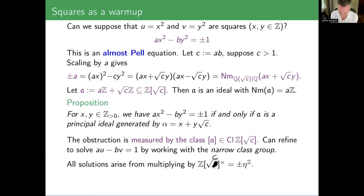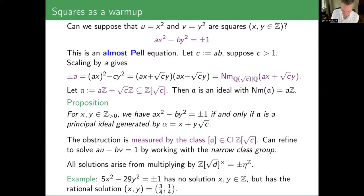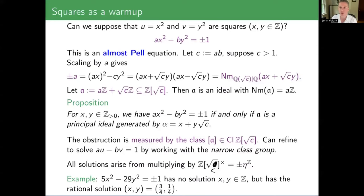Here's an example: if I take the equation 5x² minus 29y² equals plus or minus one. This is an example where there is no solution over ℤ, but there is a solution over ℚ — you plug in three-quarters, one-quarter. To know that there isn't a solution in integers — those are exactly the ghosts of the class group. That's how you can be sure that you have an obstruction; you can get your hands on it in a labeled way.